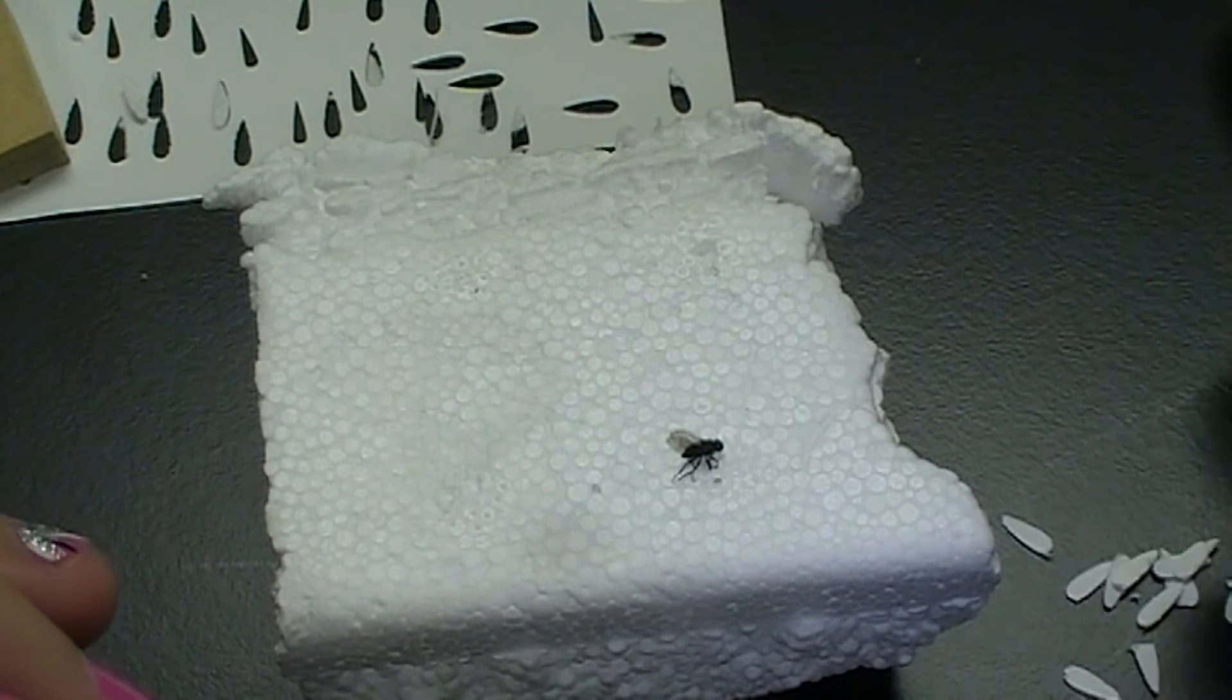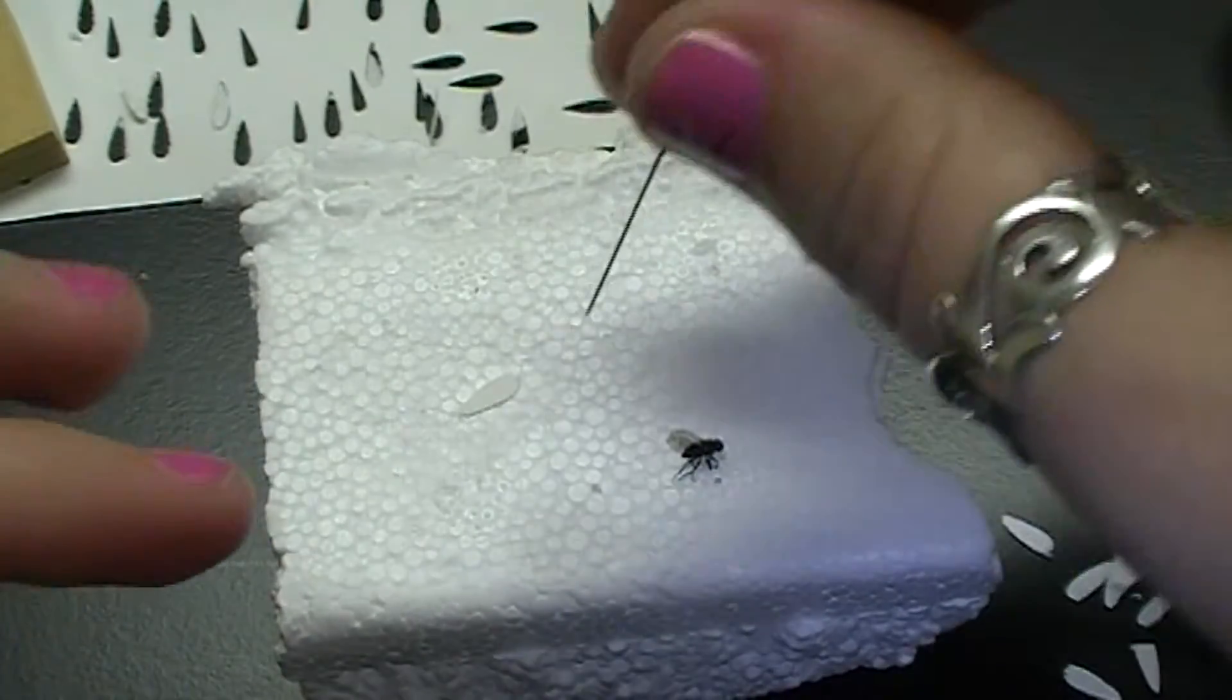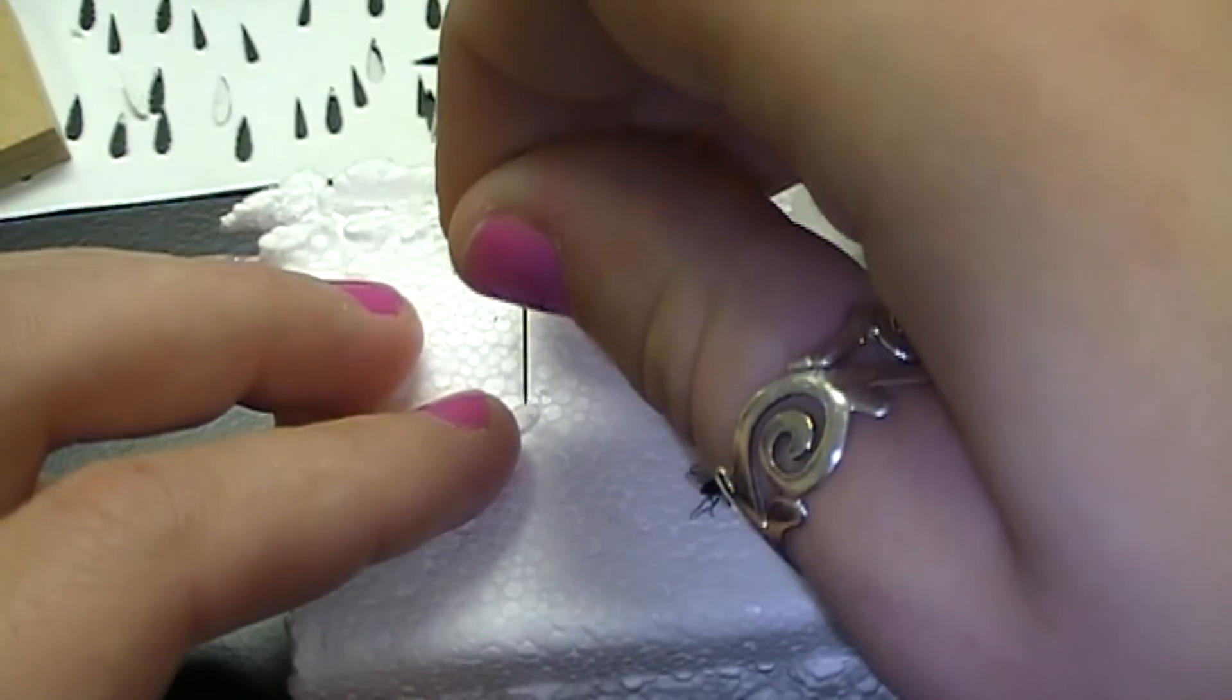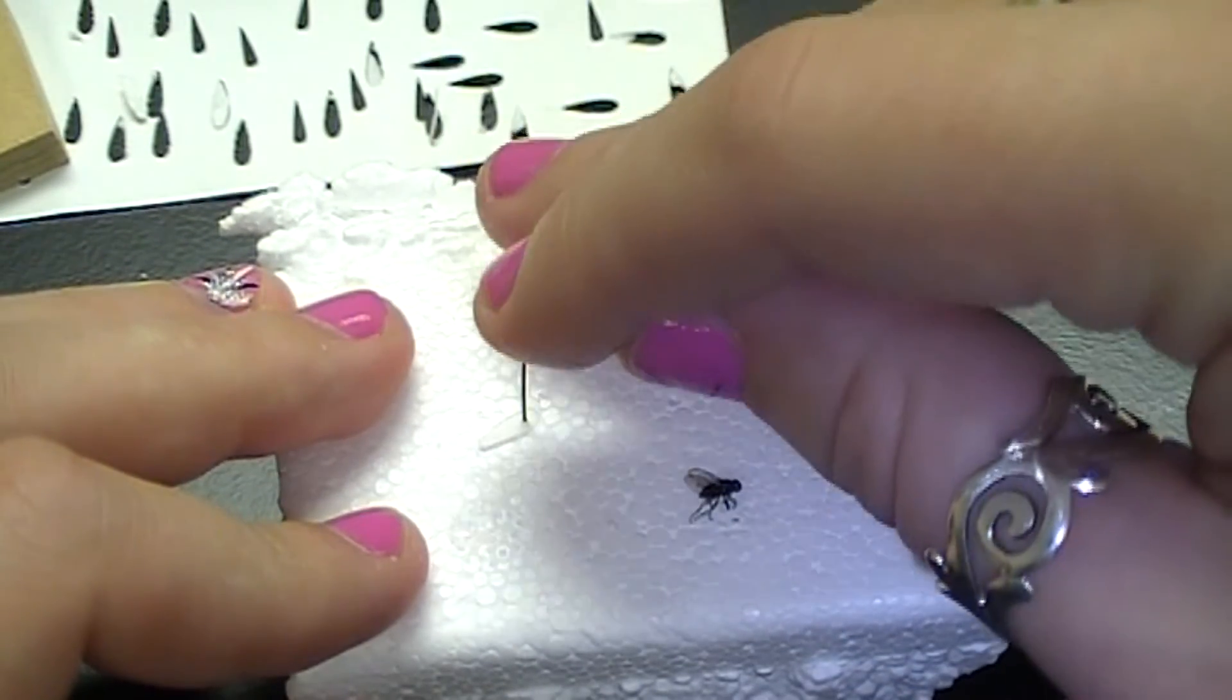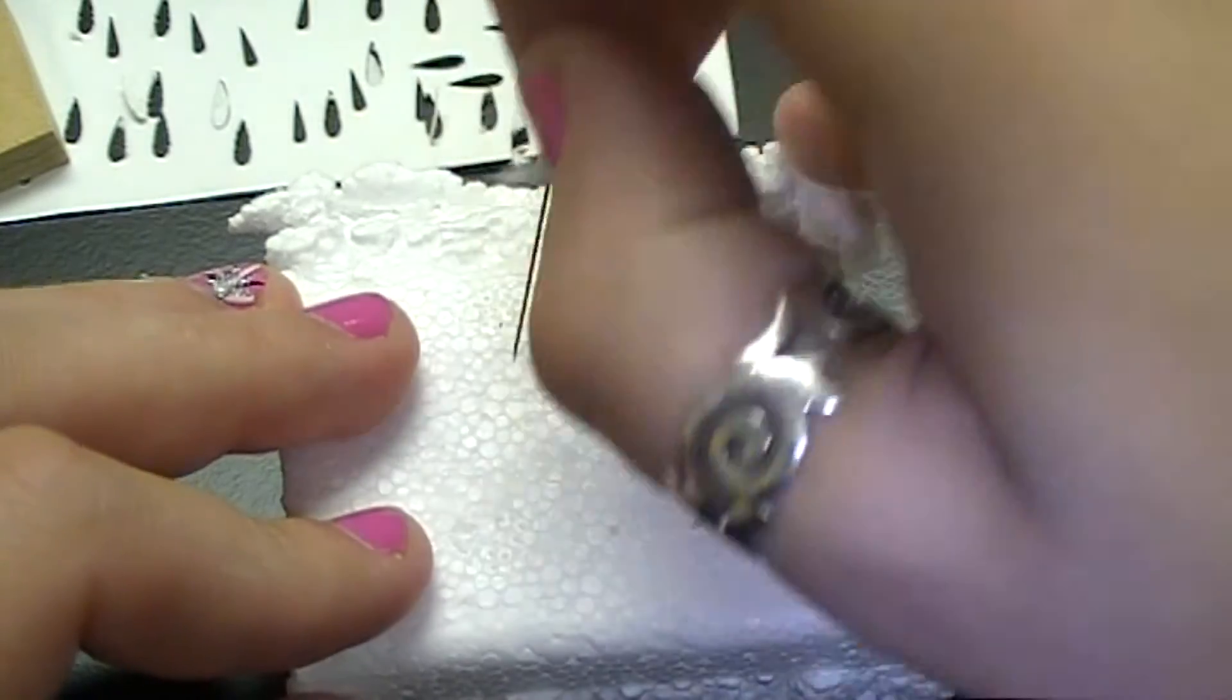The first thing you're going to do is get a point, which is that teardrop-shaped piece of paper, and pin the round end of that point. The point then becomes a placeholder for the insect.